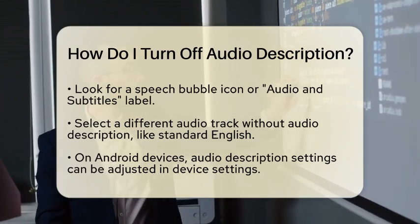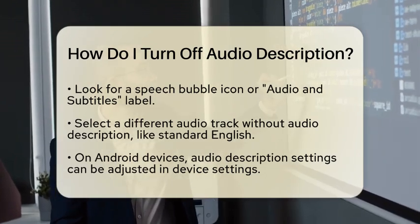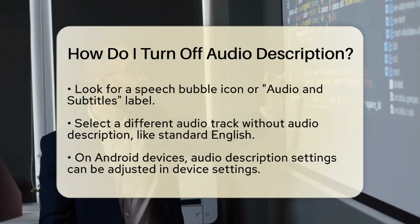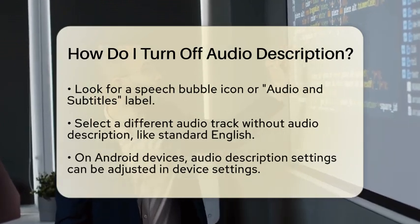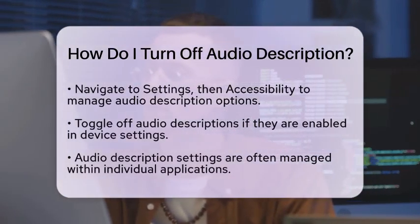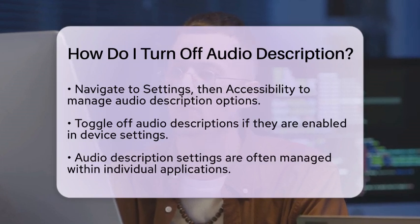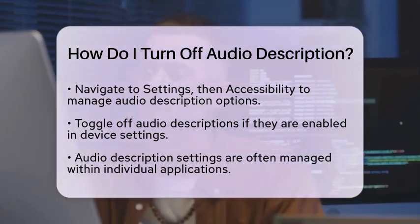If you are using an Android device, you can also manage audio description settings through your device's settings. This method generally applies to video content played directly on your device rather than within specific applications. To turn off Audio Description, go to your device's settings. From there, navigate to the Accessibility section. Look for any options related to audio descriptions and toggle them off if you find them enabled.